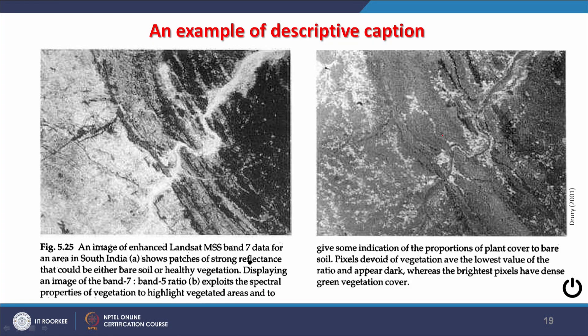Another example from Drury's book shows two images of different Landsat band data. 'A' shows patches from Band 5 and 'B' from Band 7, with full, clear descriptions provided. Once you read the entire caption and examine the images, you can understand them very clearly.